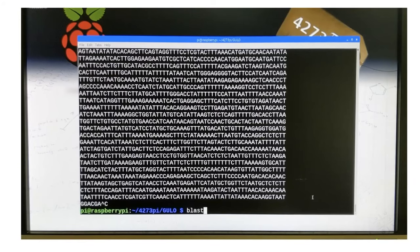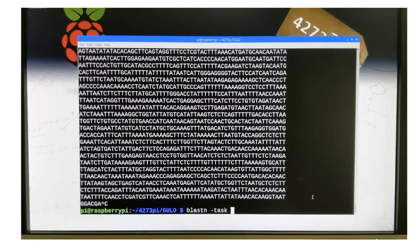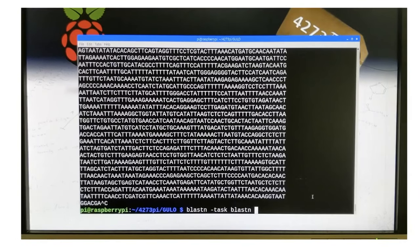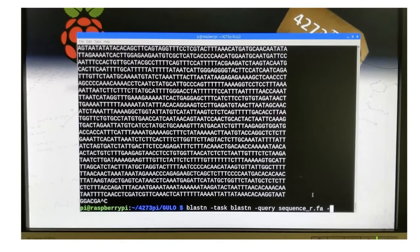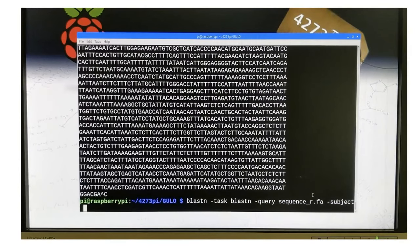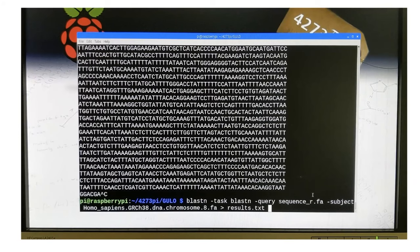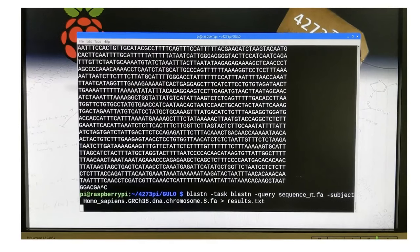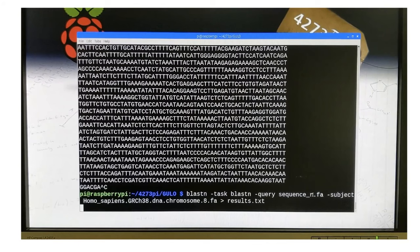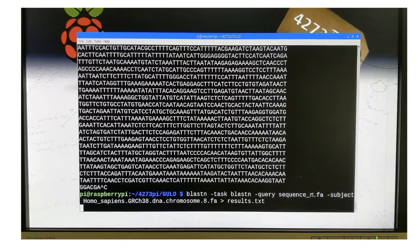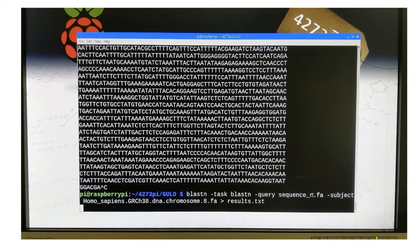What they do is they BLAST search this gene involved in vitamin C production against human chromosome 8 and see what they find, see if they can look at the alignments and find some mutations. I should say the gene that we give them is from the mouse, so they're blasting a mouse gene against human chromosome and looking for insertions or deletions that would infer that we have a pseudogene rather than a functional copy of the gene.